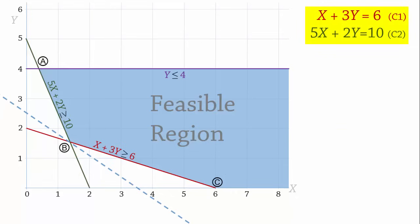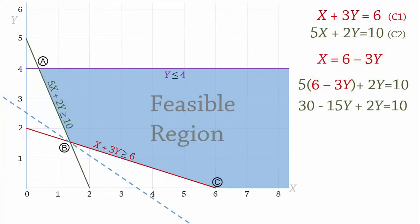Let's use the substitution method. From C1, we can write x in terms of y to give x equals 6 minus 3y. We can then substitute that expression into C2, and that simplifies to 30 minus 15y plus 2y equals 10, which gives negative 13y equals negative 20, and that gives y equals 1.54.